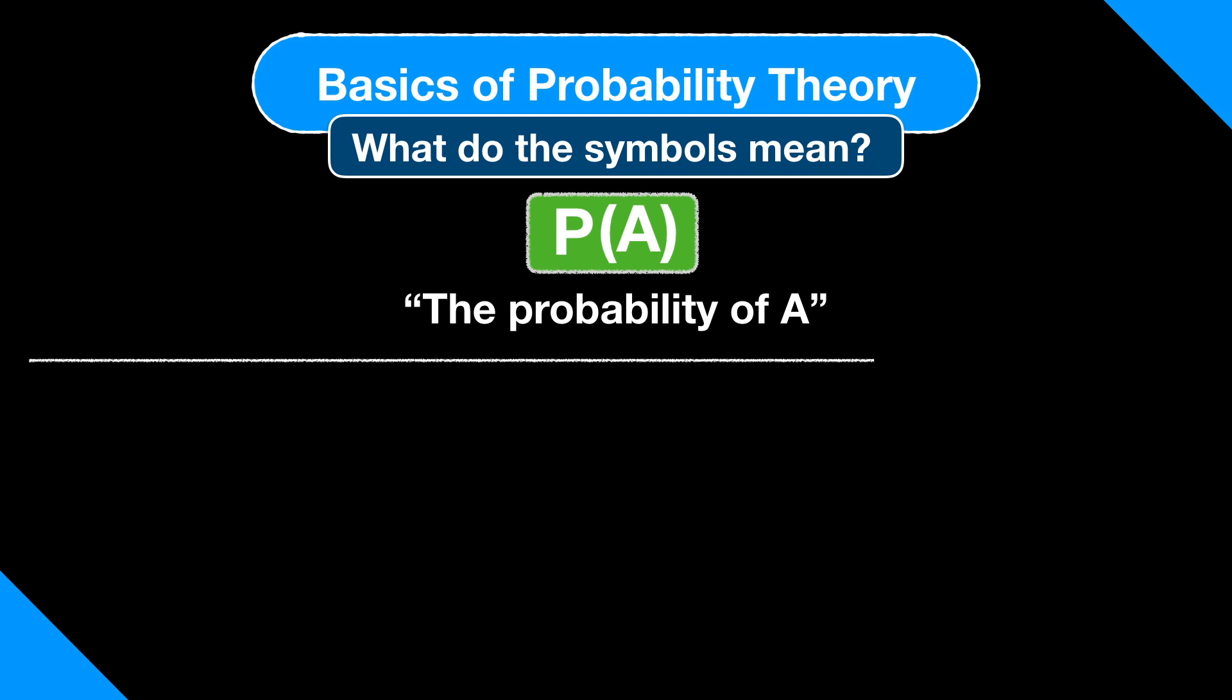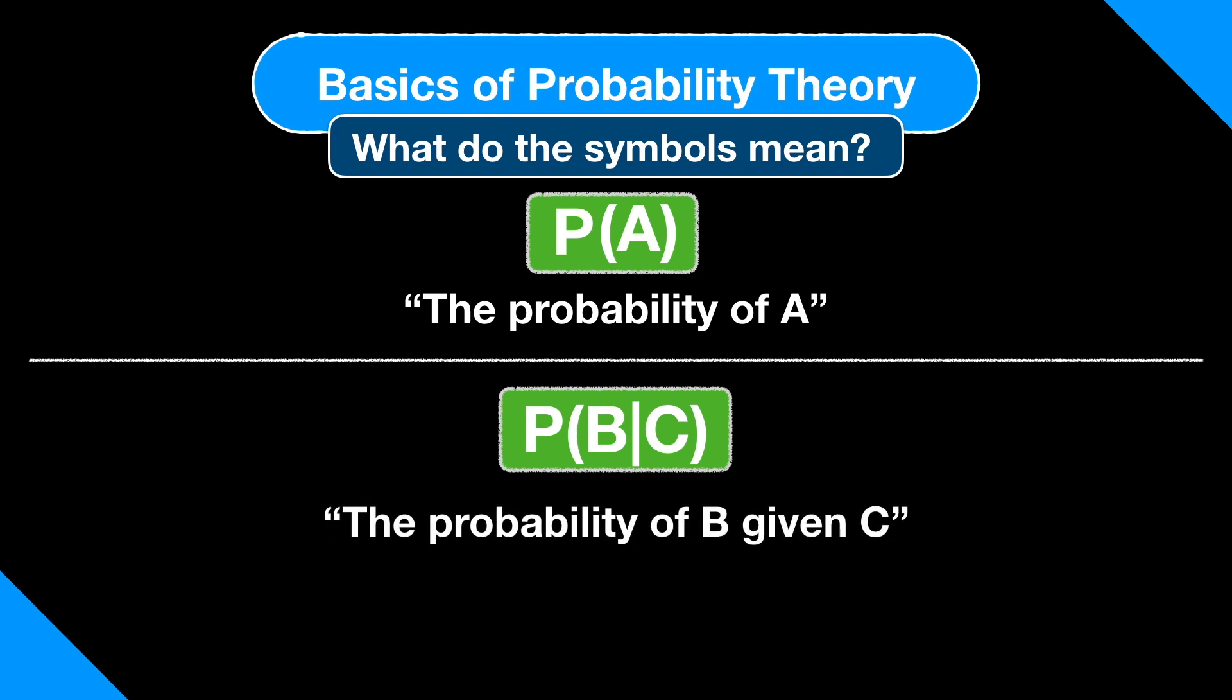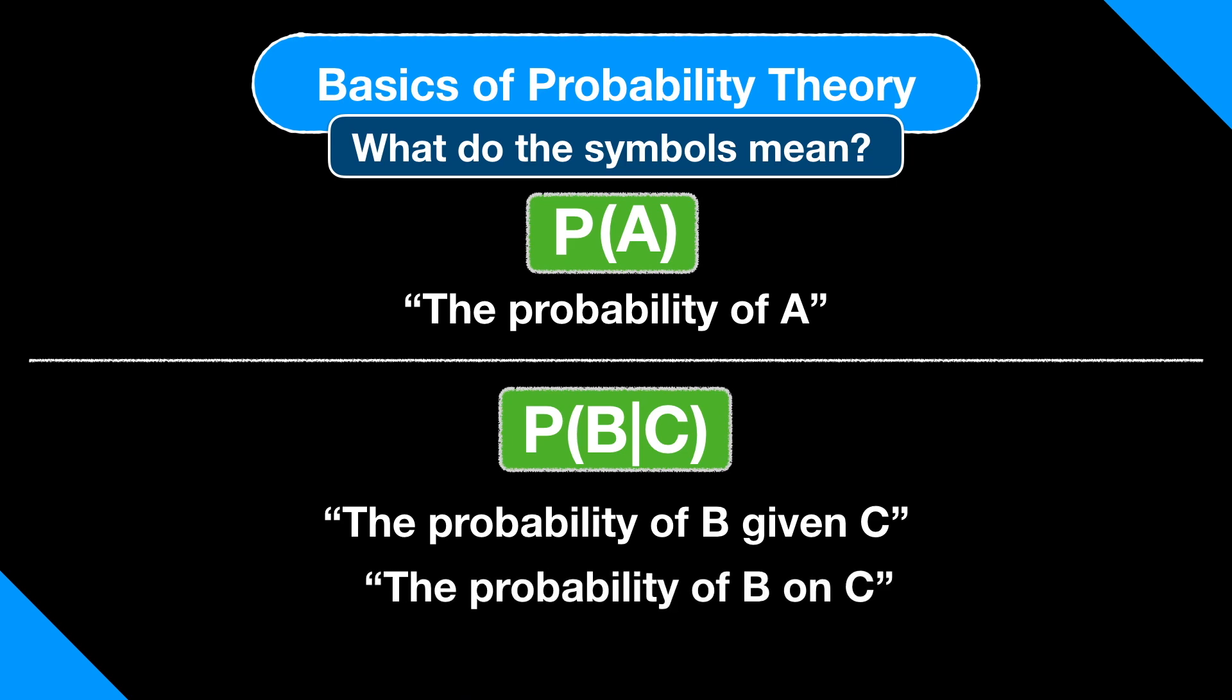Now say I wanted to consider a conditional probability. We can symbolize it like this. This means the probability of B assuming C is true. Most commonly, it's read as the probability of B given C or the probability of B on C.